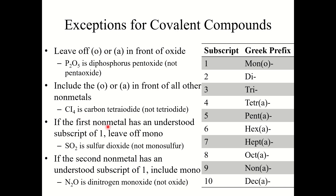One other exception: if the first nonmetal has an understood subscript of 1, like in CI4 or SO2, you can leave off the prefix mono. So CI4 is carbon tetraiodide, not monocarbon tetraiodide. SO2 is sulfur dioxide, not monosulfur dioxide. However, if the second nonmetal has a subscript of 1, you do include mono. So N2O would be dinitrogen monoxide, not dinitrogen oxide.